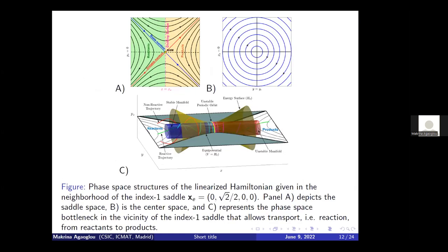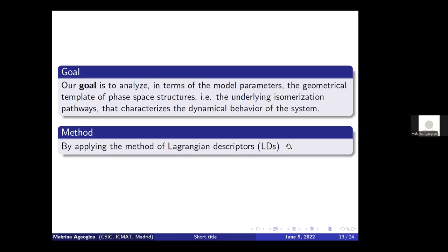When we linearize our system about these fixed points, we can see the saddle space, where the NHIM is located at the intersection of stable and unstable manifolds, and in the center space, trajectories are periodic. Our goal is to analyze, in terms of the model parameters, the geometrical template of phase space structures — the underlying isomerization pathways that characterize dynamical behavior. We do so by applying the method of Lagrangian descriptors, using the p-norm definition.